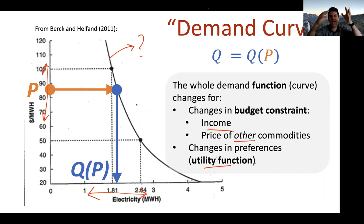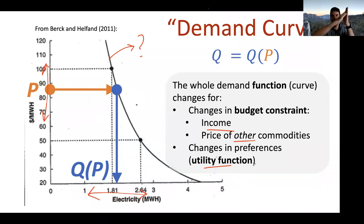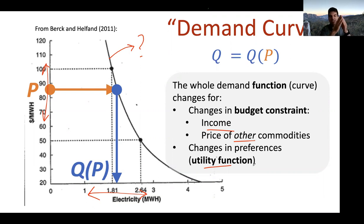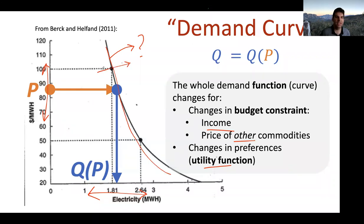They change if the budget constraint line rotates because of other prices, or if the indifference curves shift due to changing preferences. If neither of those happen, and only the price of the focused good moves, the demand curve itself doesn't move—you just move along it. It's all ceteris paribus: everything else stays the same, only the price of the focused good changes, and that moves you along the demand curve.